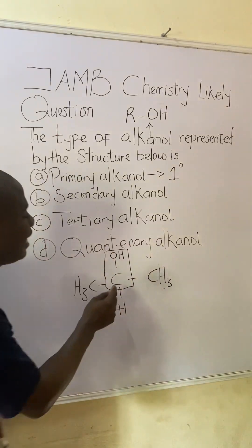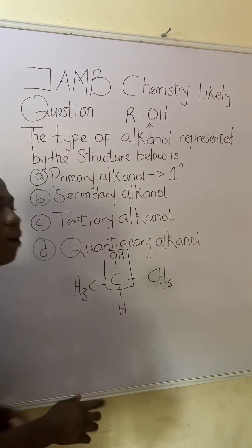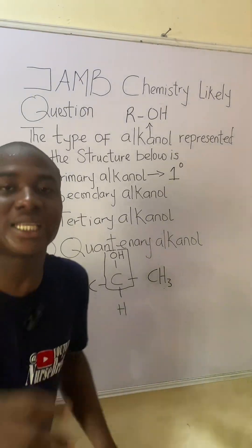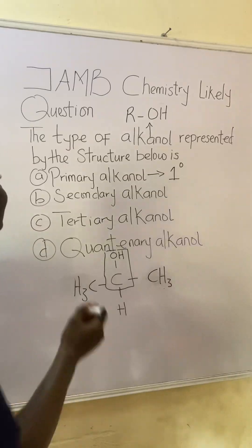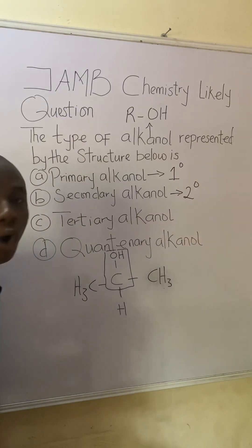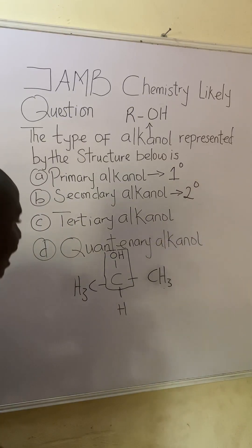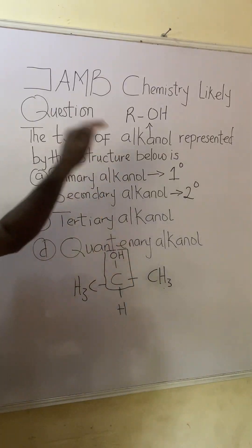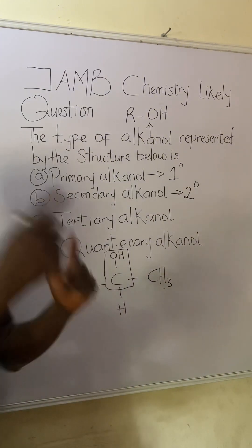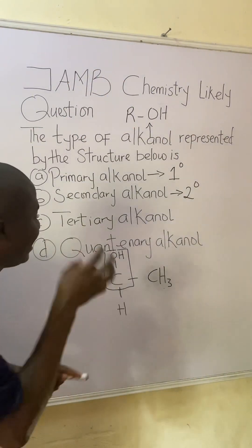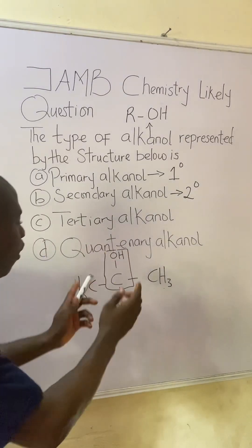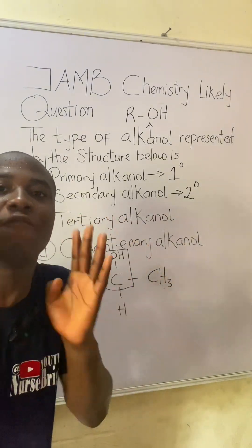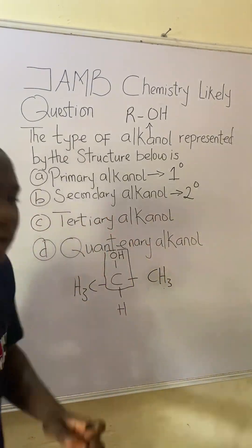In the structure given to us, the carbon bearing the functional group is directly attached to two carbons. So we say that this alcanol is a secondary alcanol. The type of alcanol represented by the structure below is secondary, because the carbon bearing the hydroxyl group is attached to two carbons directly.